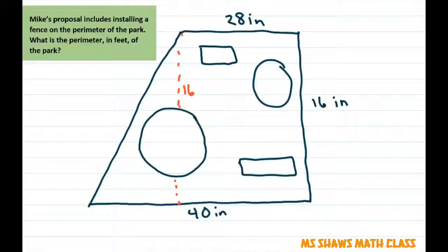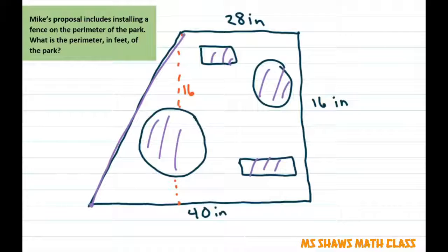All right. The next one says Mike's proposal includes installing a fence on the perimeter of the park. What is the perimeter? So again, we have these little shapes in here, but we don't have to worry about those. We just need to find this length here. So we knew that this part is 28. Therefore this side is 12 and this would be a right angle.